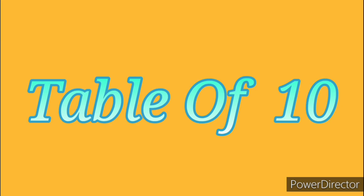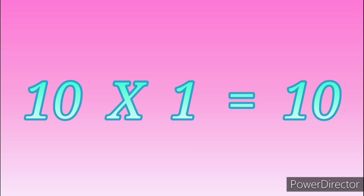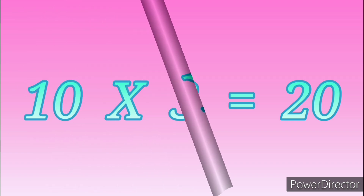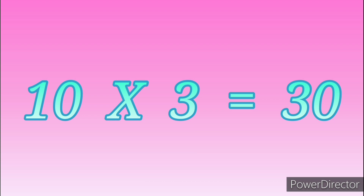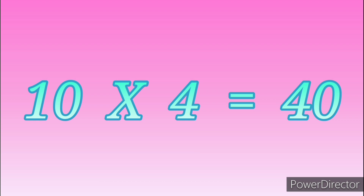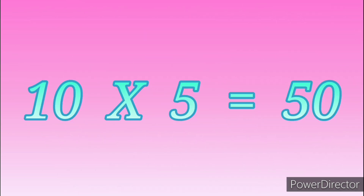Table of 10. 10 ones are 10. 10 twos are 20. 10 threes are 30. 10 fours are 40. 10 fives are 50.